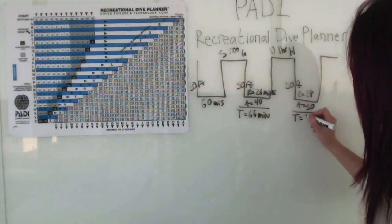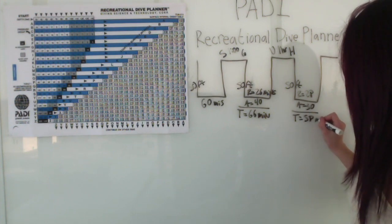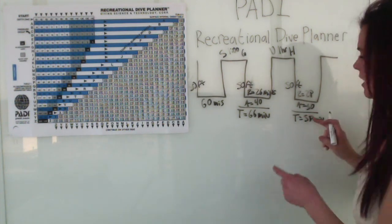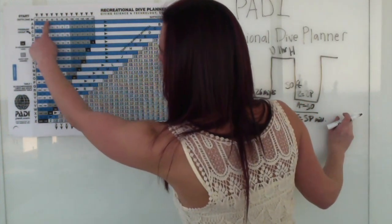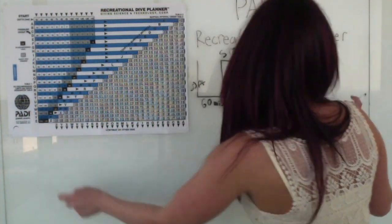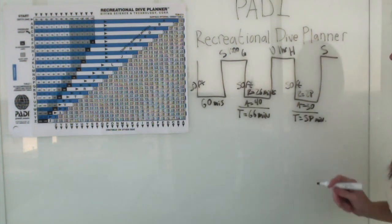The total time will be 58 minutes residual nitrogen. So when we come up to the surface after that time, our final pressure group will be pressure group S.